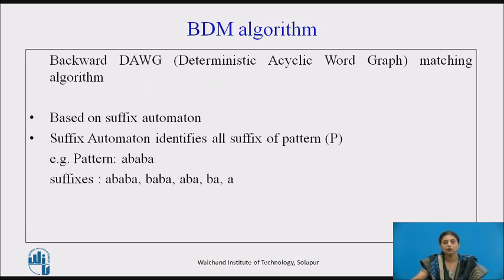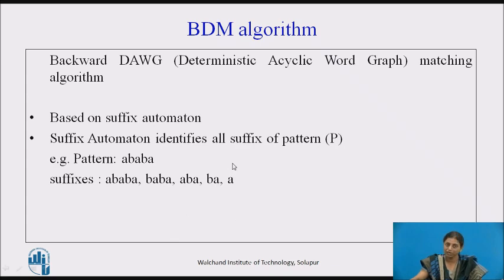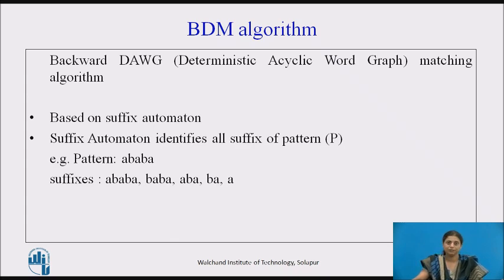What is the BDM algorithm? It is the Backward DAWG Matching algorithm, or Deterministic Acyclic Word Graph algorithm. The word 'backward' means we are processing from right to left in the window position. This algorithm is based on suffix automata.